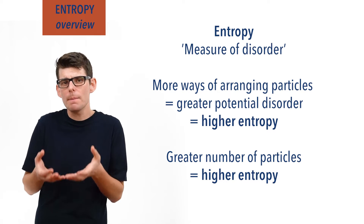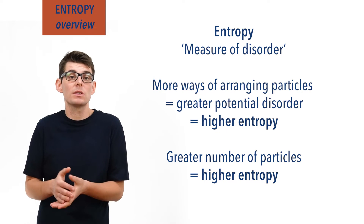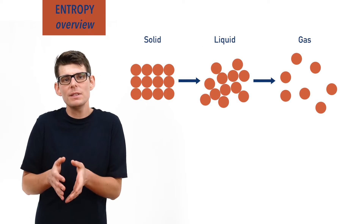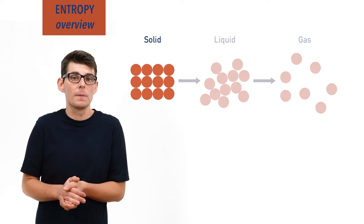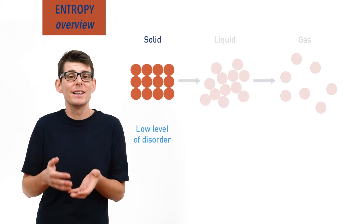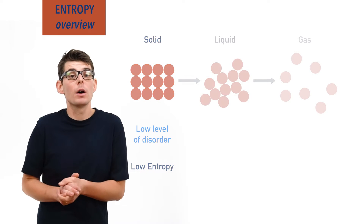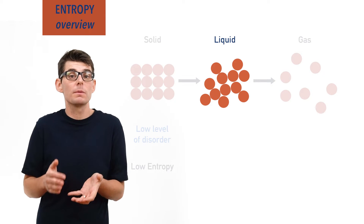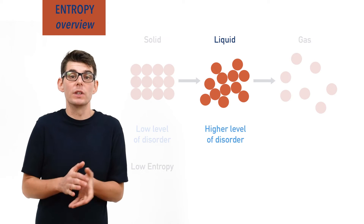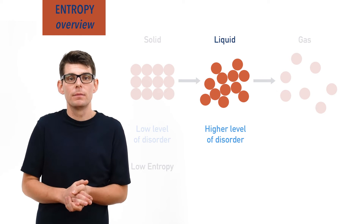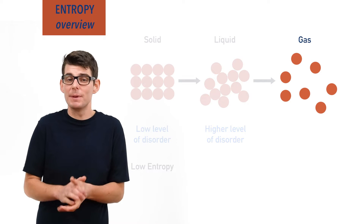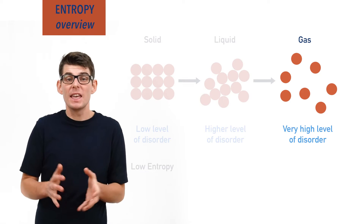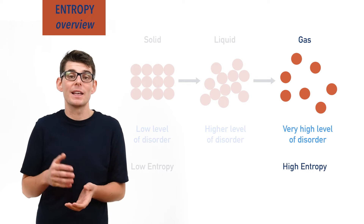But it isn't just the number of particles that has an impact on the potential disorder of a system. The easiest way to see this is with solids, liquids, and gases. There are a limited number of ways to arrange particles in solids, meaning they have a low level of disorder and a low entropy. In a liquid, particles are free to move around much more, meaning there are lots of possible ways the particles can be arranged — a higher entropy than a solid. In gases, particles can basically be anywhere within their container, giving a very high level of entropy compared to solids and liquids.